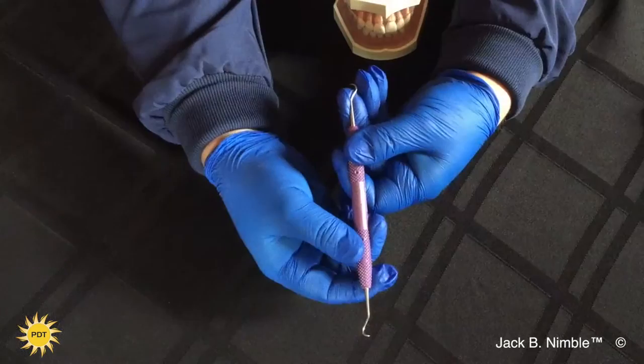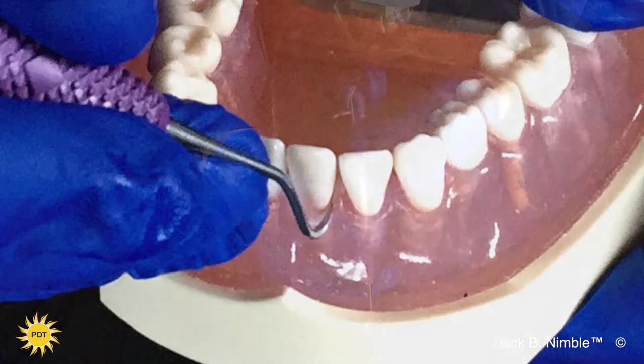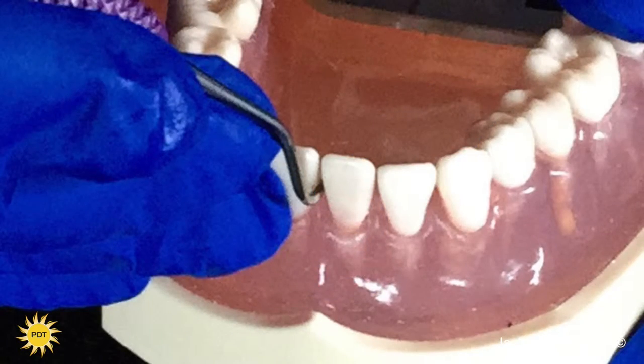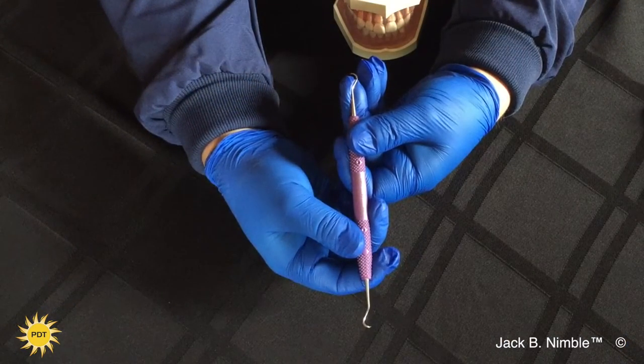This allows you to have more positive lateral pressure and the smaller curvature allows you to have better angulation and access around crowded teeth, orthodontic brackets, and it's also better for primary dentition.